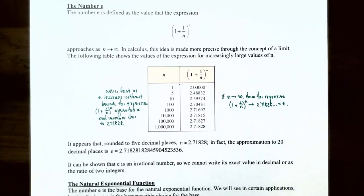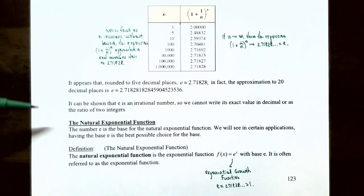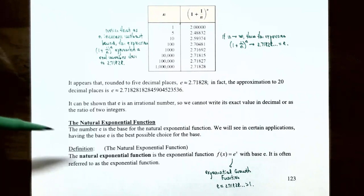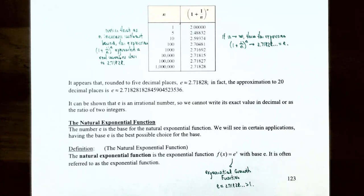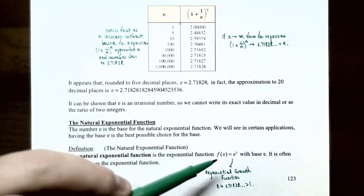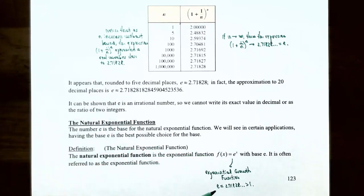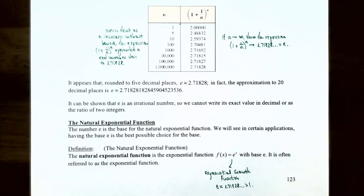Since e is irrational it cannot be written as an exact decimal or as a ratio of two integers. The number e is the base of the natural exponential function. In certain applications, having base e is the best possible choice. The natural exponential function is f(x) = e^x, where e ≈ 2.71828; since the base is greater than 1, this is an exponential growth function, and it is often referred to simply as the exponential function.